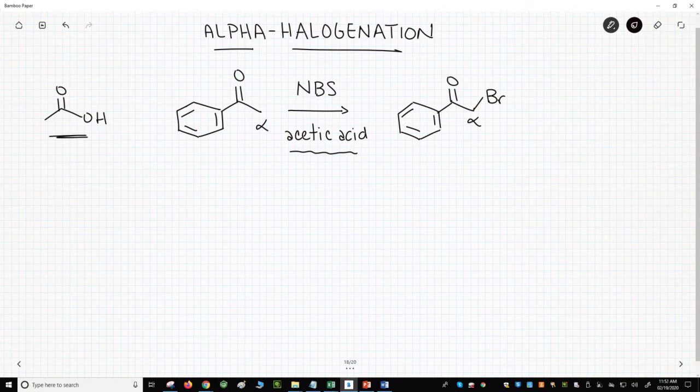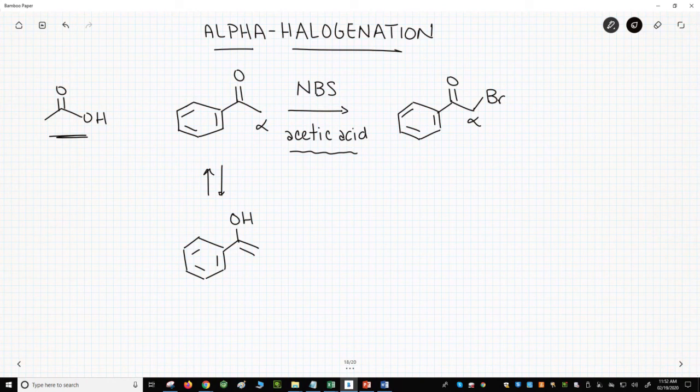Acetic acid catalyzes the formation of the enol tautomer. The reaction starts with tautomerization of the ketone to its enol form. The tautomerization is facilitated by having acid in the reaction. The enol is an alkene with an electron-donating group, an alcohol.